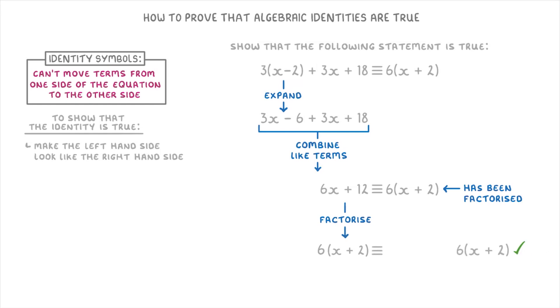And then that's it! We've proved that the identity is true because we've shown that the left hand side is exactly the same thing as the right hand side.